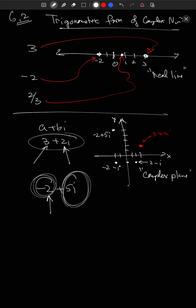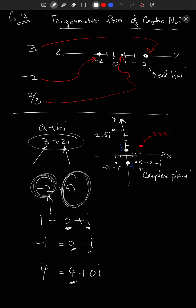i would be right there because i is zero plus i, so you plot the point (0, 1). Minus i would be zero minus i, so you plot the point (0, -1). What about just regular real numbers? 4 is 4 plus 0i, so you plot the point (4, 0) — right there. So the real numbers actually just live on the x-axis.